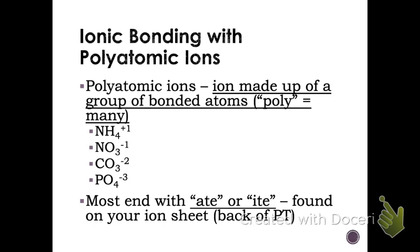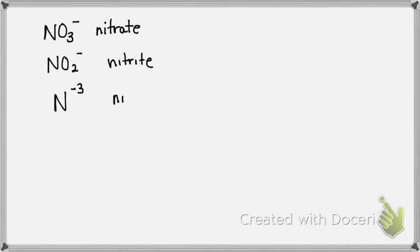Don't be afraid to use your table. Like I have here on the front board, there is this ion NO3 with a minus one charge that is called nitrate. There's this ion NO2 with a minus one charge that we call nitrite. And then we've already talked about this one, which we call nitride. So the ending is really important for distinguishing between the different ions.